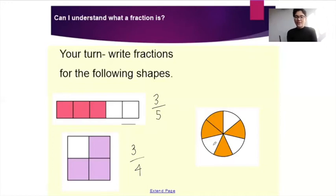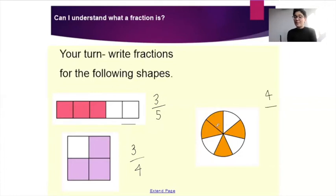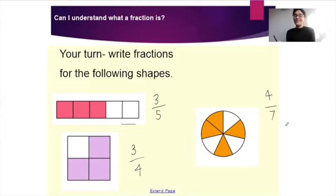This shape over here, we're going to see how much has been shaded — one, two, three, four. So four is our numerator. And how many parts do we have in total? One, two, three, four, five, six, seven. So our fraction would be four out of seven.